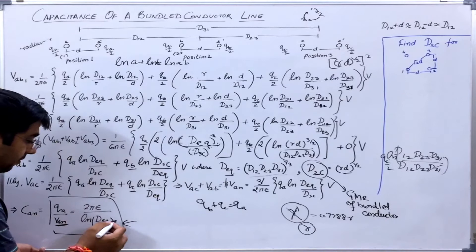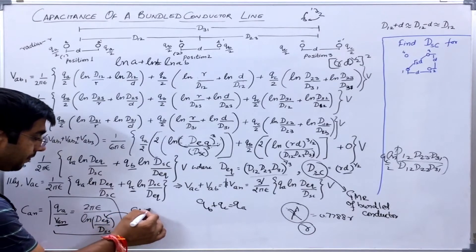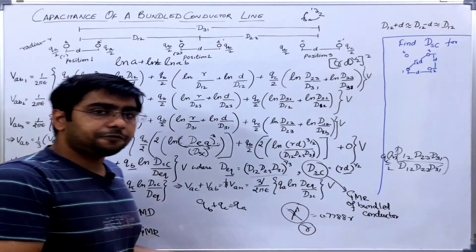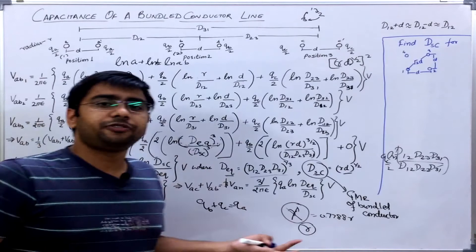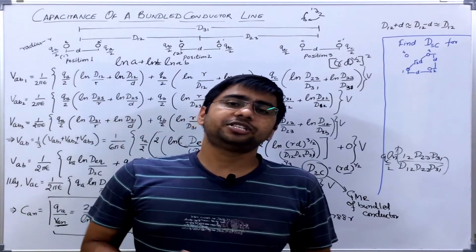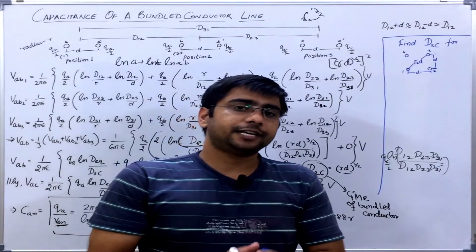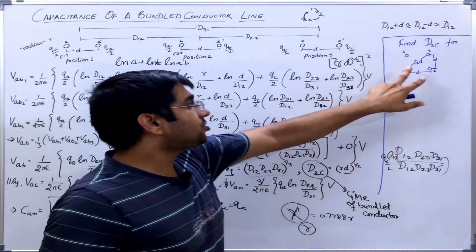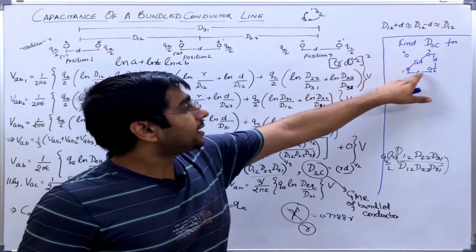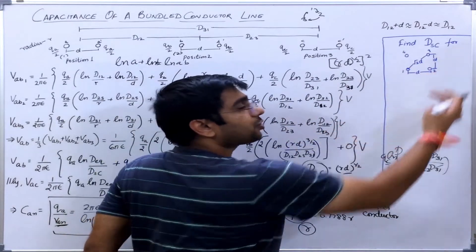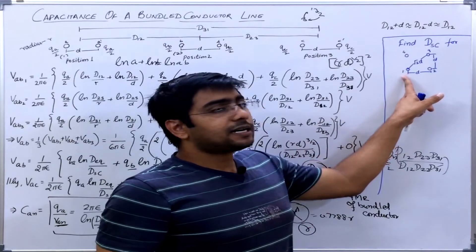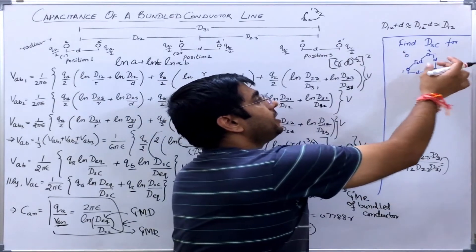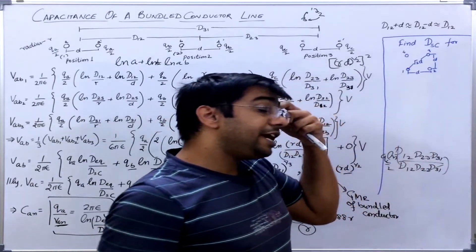This is a very simple formula — D_eq plays the role of GMD and D_sc plays the role of GMR. So it is easy to calculate the capacitance of any kind of configuration if we know how to calculate the GMD or GMR. For an example, let us derive the GMR of a configuration in which bundle conductors have 4 conductors per phase at the corners of a square of side d.